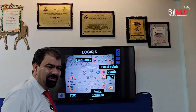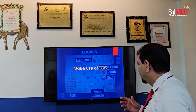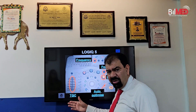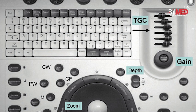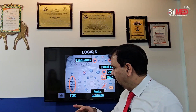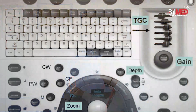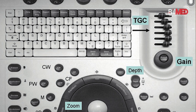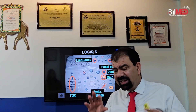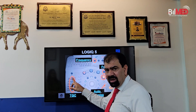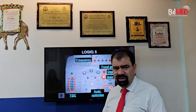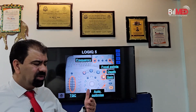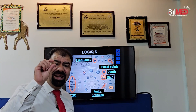Then the TGC. TGC is nothing but the gain of a specific area. For example, if you want to decrease or increase the gain of the mid part of your monitor, the mid sliders of the TGC will work for the mid part of the screen. And if you want to adjust the upper or lower side of your monitor, the corresponding TGC sliders are used. So TGC is the gain of a particular area of the screen.